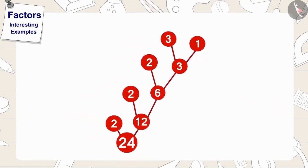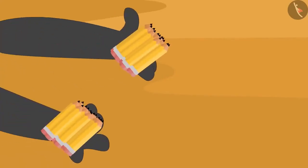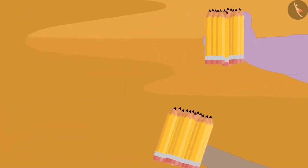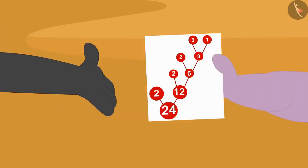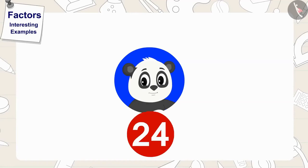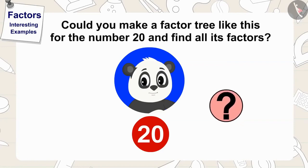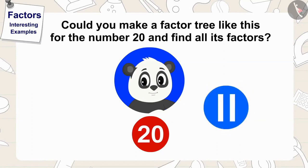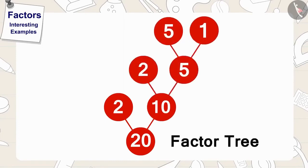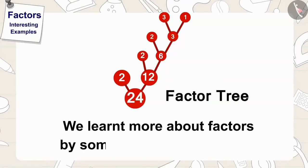Such a picture in which we show all the factors of a number by writing its factors is called a factor tree. Gooloo divided his 24 pencils equally among his 2 friends and gave them a picture of the factor tree so they could distribute the pencils equally to their friends. Children, if Gooloo had 20 pencils instead of 24, could you make a factor tree for the number 20 and find all its factors? Well done, children, you have made this factor tree correctly. In this video, we learnt more about factors by some interesting examples.